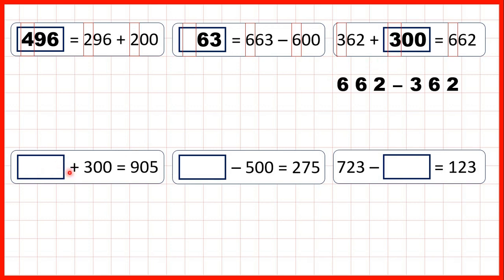Now, something plus 300 equals 905. We can highlight our hundreds digits, and again, we can remember that if we have a missing number addition, we can use subtraction to find our missing number. 905 minus 300 is 605.